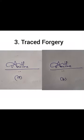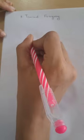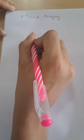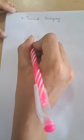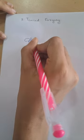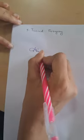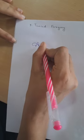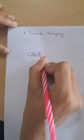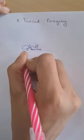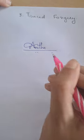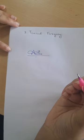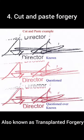In traced forgery, the writer traces over a signature or other writing. This is the direct tracing method, where the forger uses the direct or original writing to trace without using any aid.